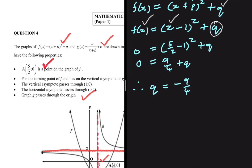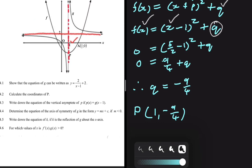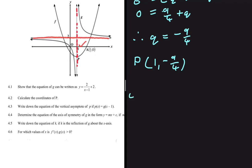So the coordinates of P, the turning point, are 1 and minus 9/4. Let's move to 4.3. The question asks us to write down the equation of the vertical asymptote of p if p of x equals g of x minus 1.